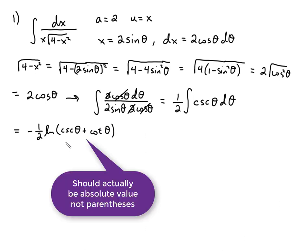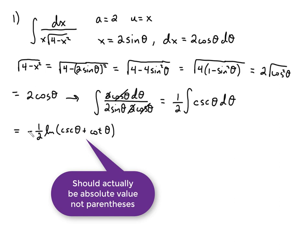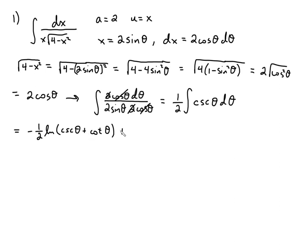negative 1 half natural log of cosecant plus cotangent. Now, in some books, in fact, I think even in our book, it might be slightly different than this, that the minus and the plus might be switched. That doesn't really matter so much. Just realize that those forms are equivalent. So I picked this up from the internet, not the book. It might be different than what the book says. Don't worry about that.